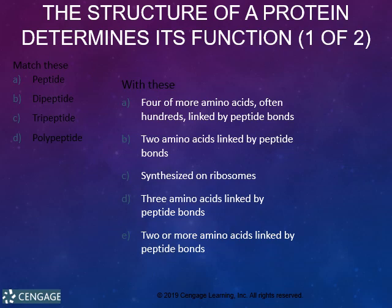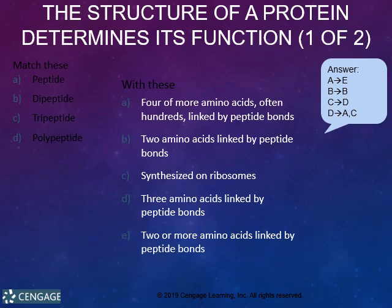A peptide is best defined as two or more amino acids linked by peptide bonds. Peptides can be differentiated as di-, tri-, or polypeptides. A dipeptide includes a linkage between two amino acids. A tripeptide is made up of three amino acids. A polypeptide is made up of four or more amino acids — usually hundreds — linked by peptide bonds. Polypeptides in the human body are synthesized by a structure in our cells called the ribosomes.